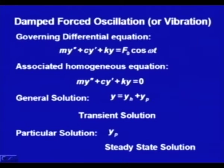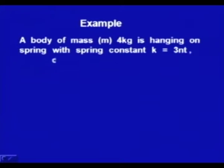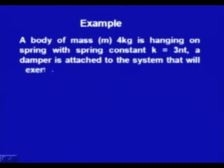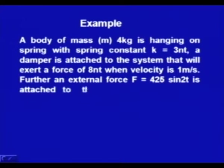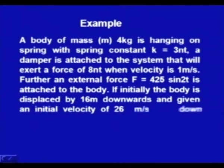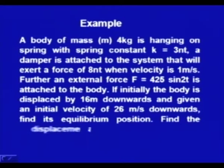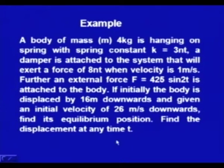Let us see all these things with the help of an example. We have a body of mass 4 kg hanging on a spring with spring constant 3 N/m. A damper is attached to the system that exerts a force of 8 N when velocity is 1 m/s. An external force of 425 sin(2t) is applied. Initially the body is displaced 16 m downwards with initial velocity 26 m/s downwards. We have to find the equilibrium position and the displacement at any time t.